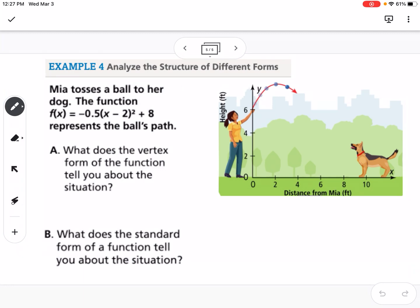We have a real-life situation here, analyzing the different types of functions, vertex form and standard form. Mia tosses a ball to her dog. The function f(x) = -0.5(x - 2)² + 8 represents the ball's path. What does the vertex form tell you? We know that the maximum height of the ball is at (2, 8), from the vertex. We can tell that it's a parabola that opens down because of the negative out front. It's wider than our parent function because of the 0.5.